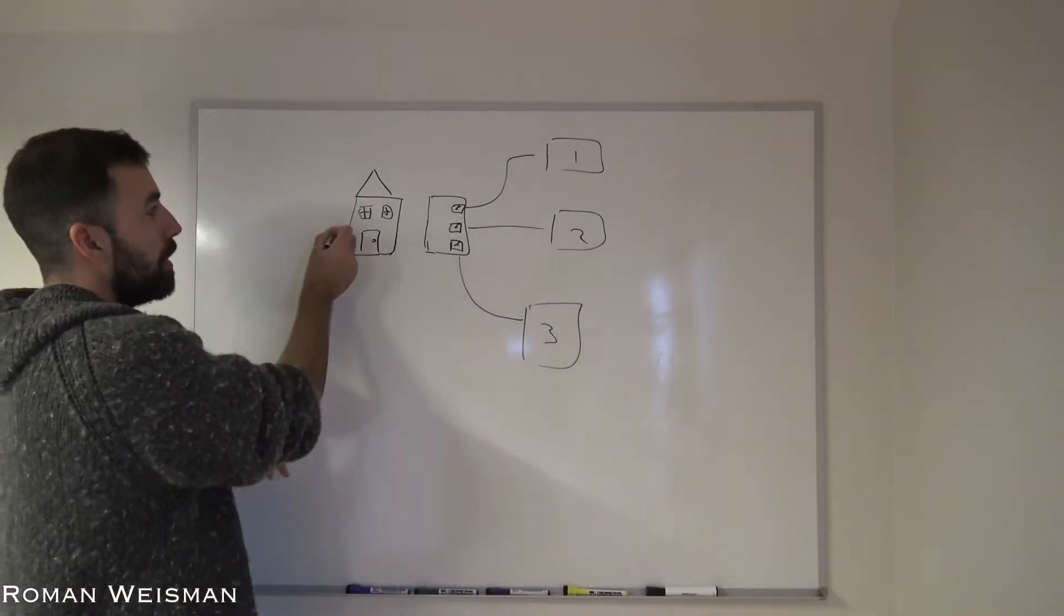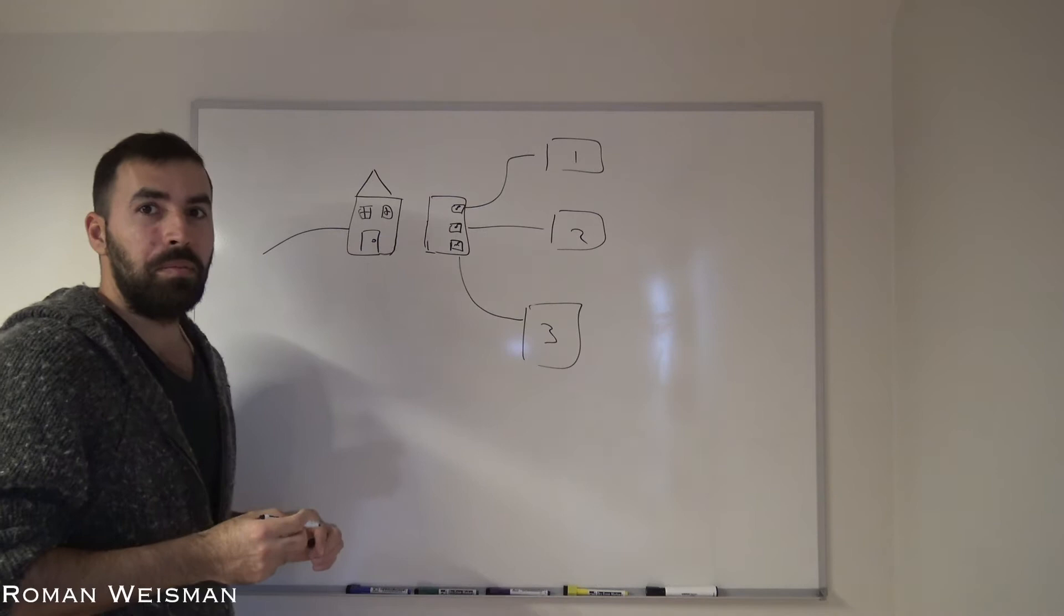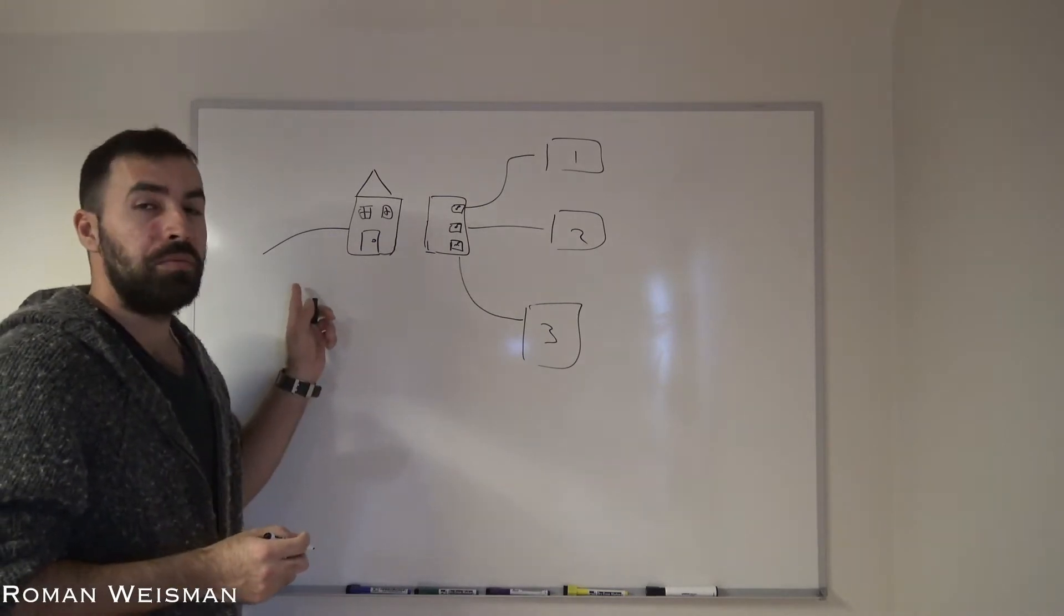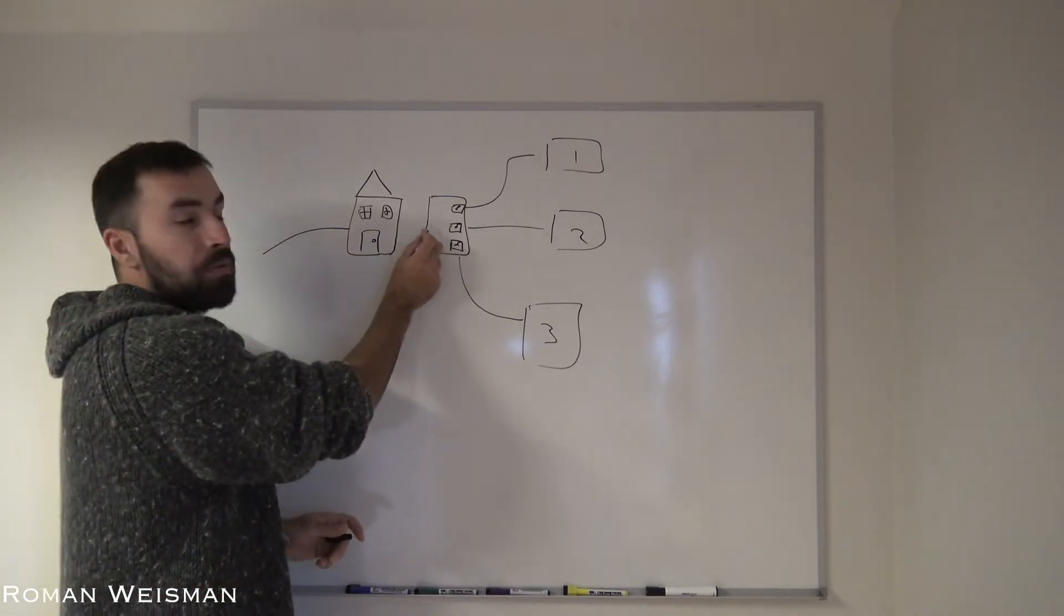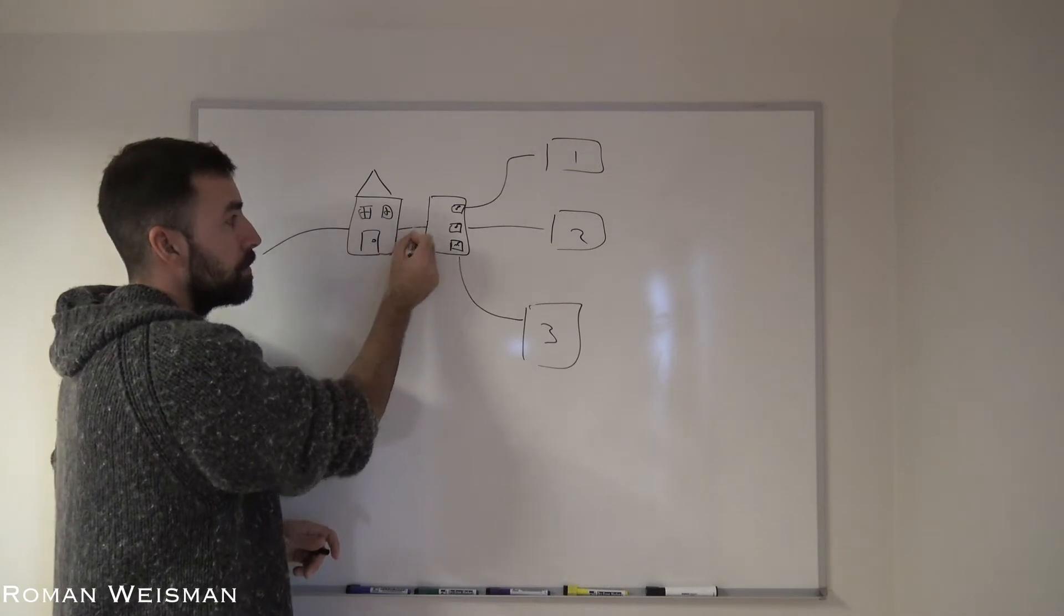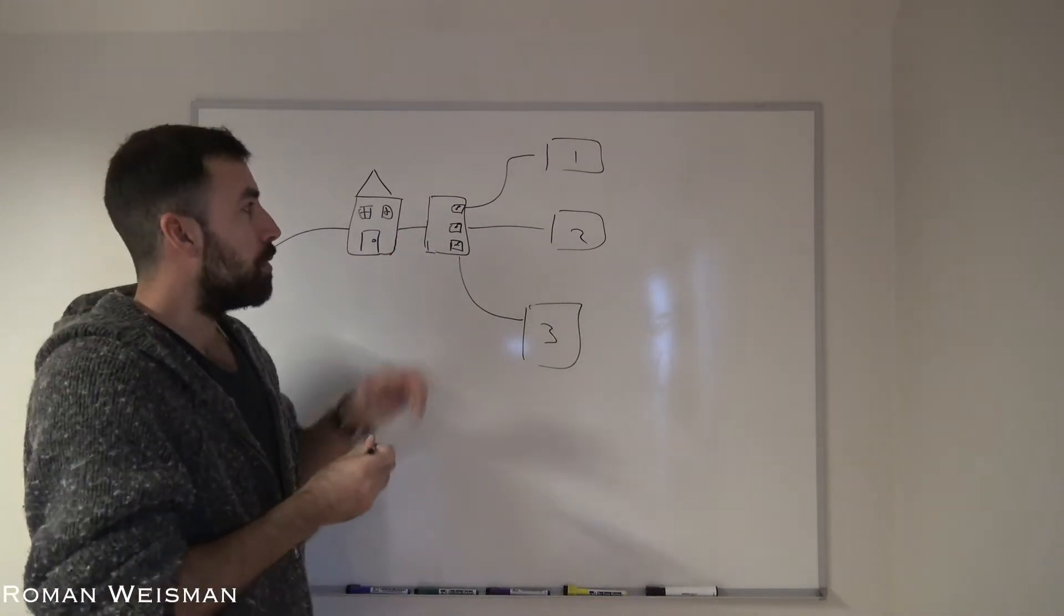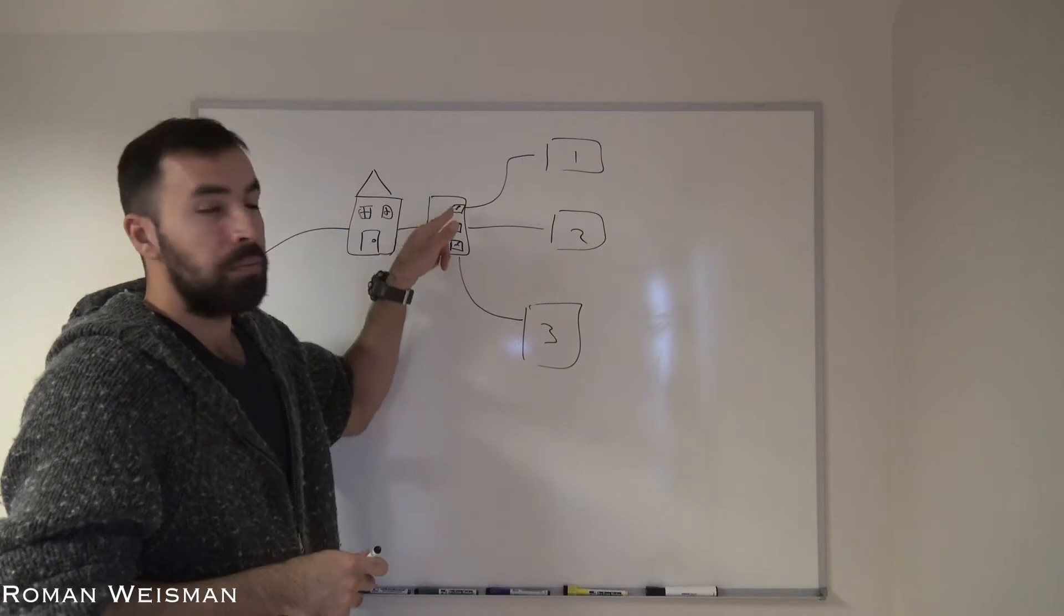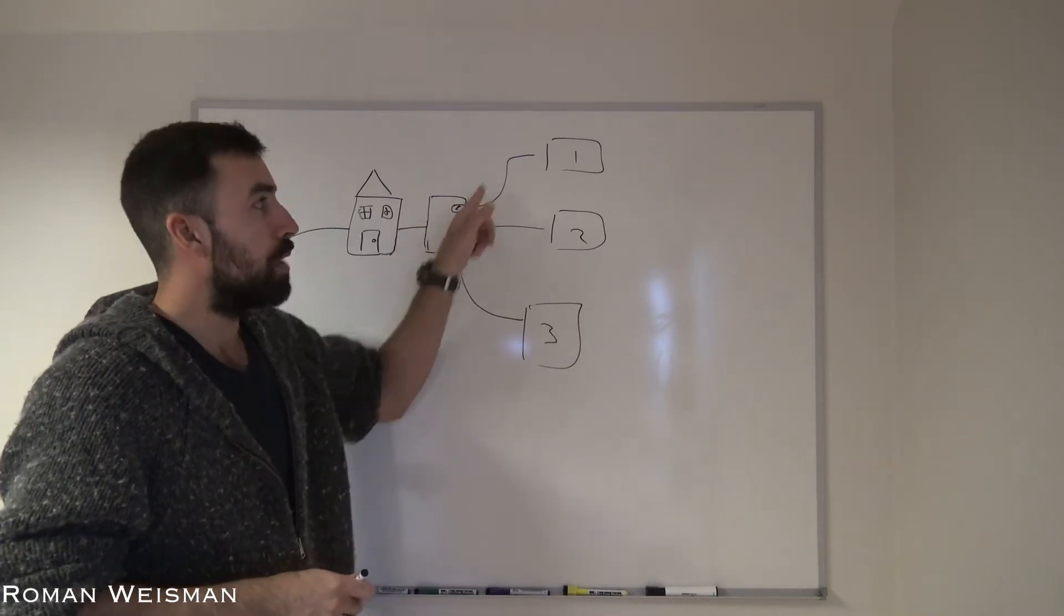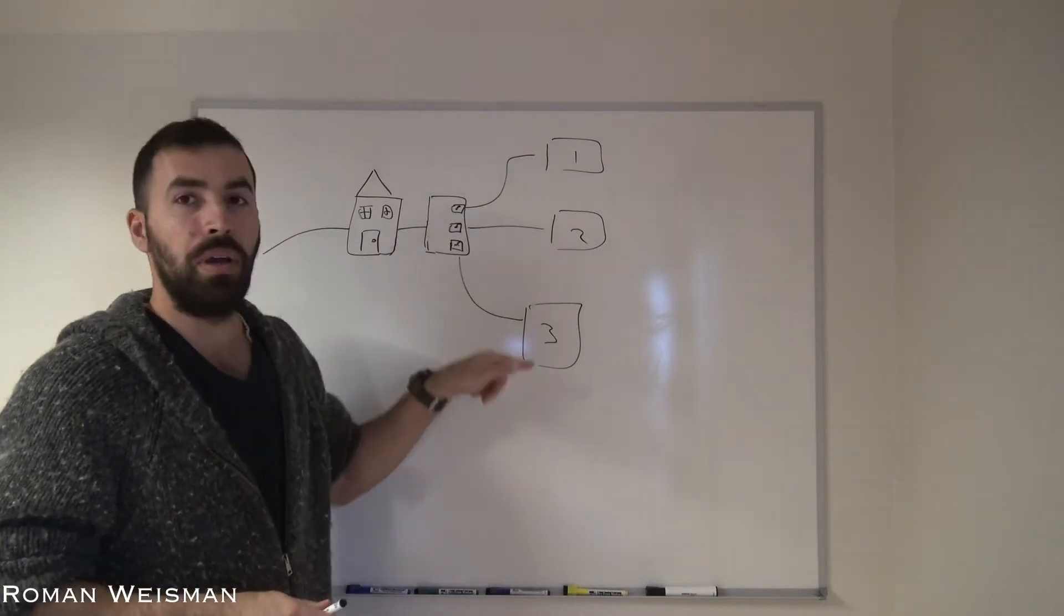This is my house. It has a main electrical cable that is running into the house and is connected into the breaker box. From the breaker box I have switches and from those switches I have more cables running into rooms number one, two and three.